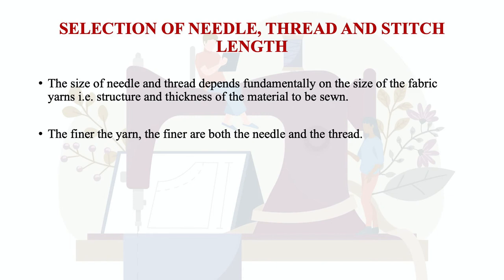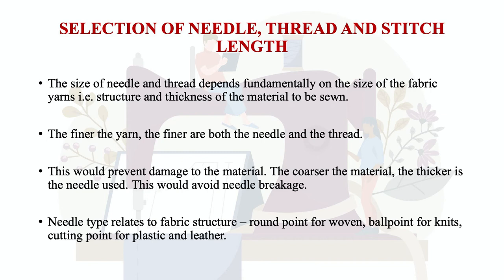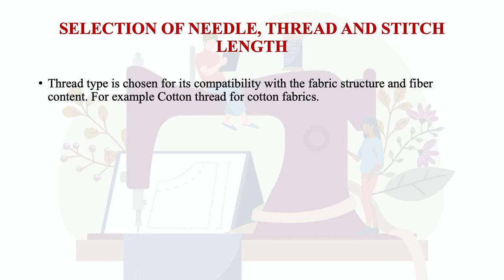The finer the yarn, the finer both the needle and thread must be — this prevents damage to the material. The coarser the material, the thicker the needle should be, which prevents needle breakage. Needle type relates to fabric structure: round point for woven, ball point for knits, and cutting point for leather and plastic. Thread type is chosen for compatibility with fabric structure and fiber content — for example, cotton thread for cotton fabrics.